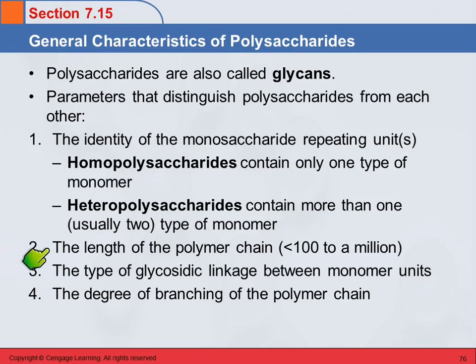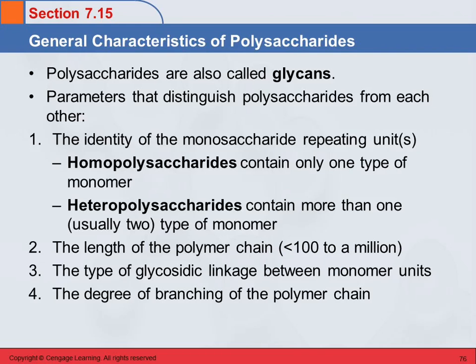Another distinguishing parameter is the length of the polymer chain. Some of these are relatively short, under 100 units. Some of them are up to a million units long — that's a lot of monosaccharides just bonded together. So shorter ones are going to be different than longer ones.